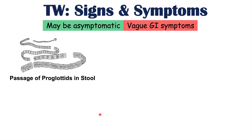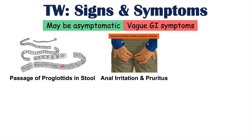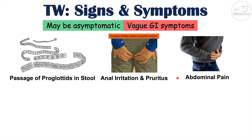Some of the more important signs and symptoms of a tapeworm infection include passage of proglottids in the stool. These proglottids can appear as white or yellow pieces in the stool. Along with passage of these proglottids, there can be anal irritation and pruritus, which is itching.